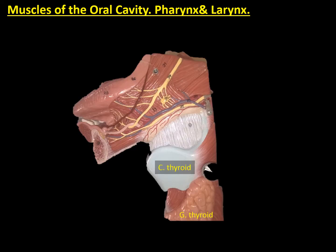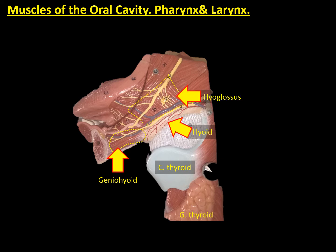In this view of the anatomical model, we can observe the floor of the mouth, the pharynx, and the larynx. The hyoid bone divides the floor of the mouth from the larynx, which is represented here by the thyroid cartilage. The mandible is connected with the hyoid bone by the geniohyoid muscle, which is another suprahyoid muscle. Out of the greater cornu of the hyoid bone, we can see the fibres from the hyoglossus going laterally to insert into the tongue. Here we also observe the styloglossus fibres coming from above and crisscrossing with those of the hyoglossus muscle.